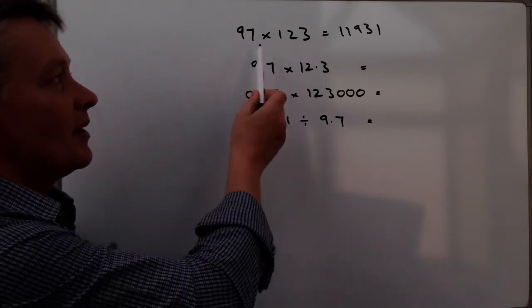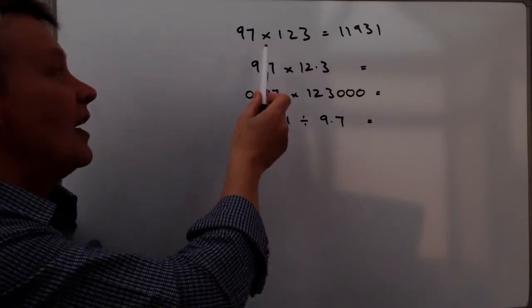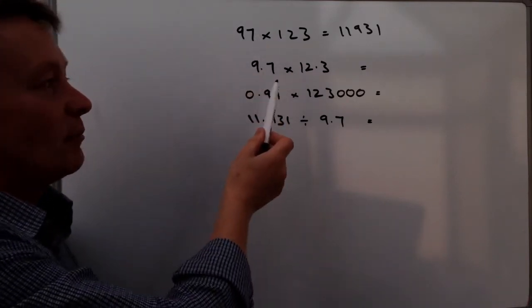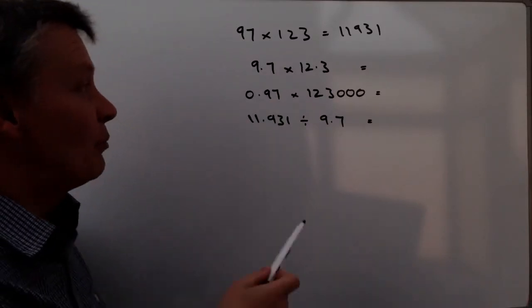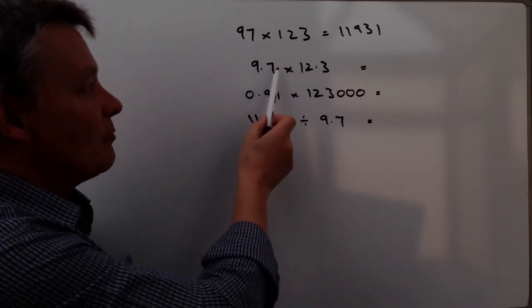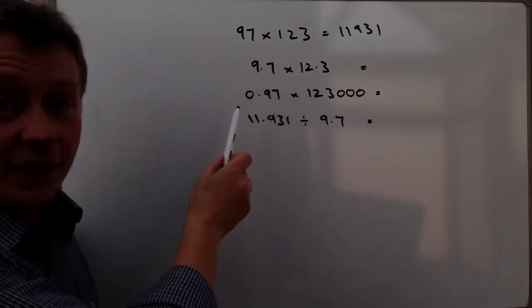So at the moment the decimal point on this information that we're given is at the end. So it's 97 with a decimal point, 123 with a decimal point afterwards. But the first question has the decimal point moved once. This 9.7 is from 97.